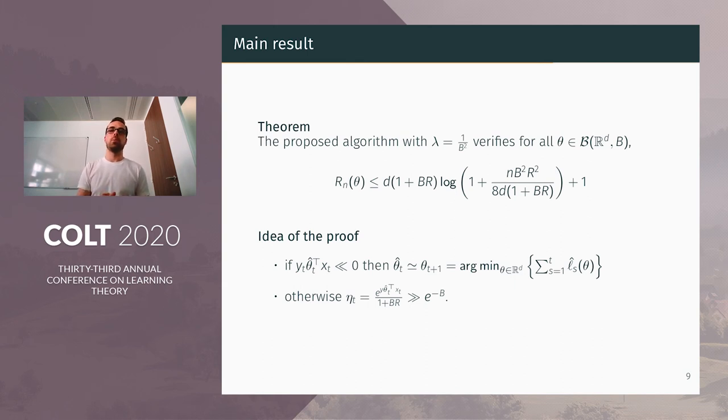The main result of our paper is to show a bound on the regret of this algorithm, which is logarithmic in the number of samples. It doesn't have an exponential multiplicative constant. And in fact, the dependency in B is near to linear.